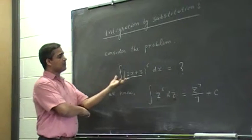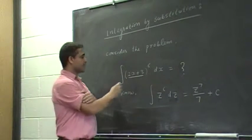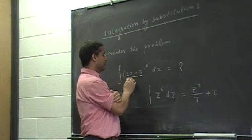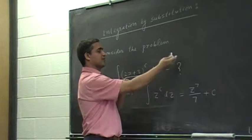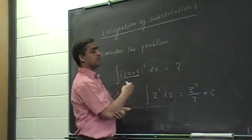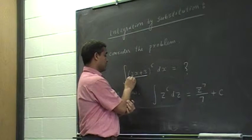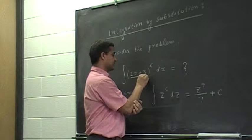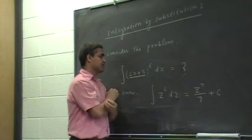That's why the problem with this is, this is different from x. If it were x to the 6 dx, it would have been x to the 7 over 7 plus c. So, the problem is this term being different from x.